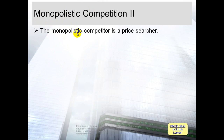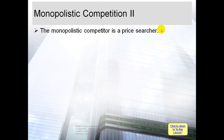The monopolistic competitor is a price searcher. In perfect competition, you are a price taker — you take the price which is determined by the market; you cannot control the price at which you sell your product. While in monopolistic competition, the firm is a price searcher because it has control over the price of its product.